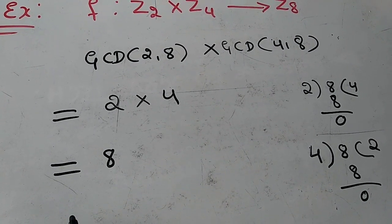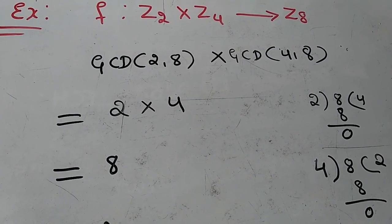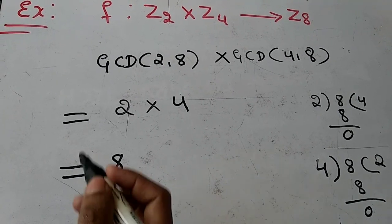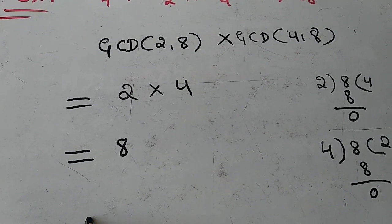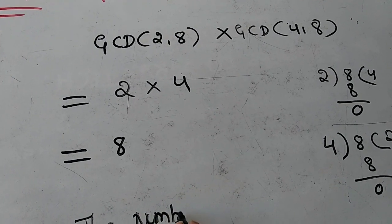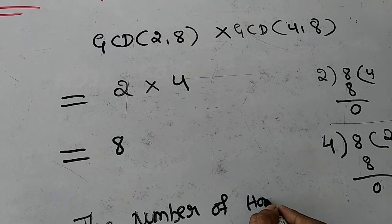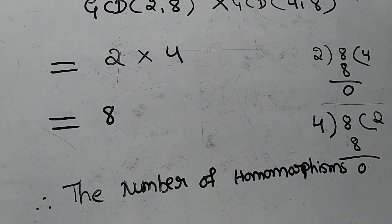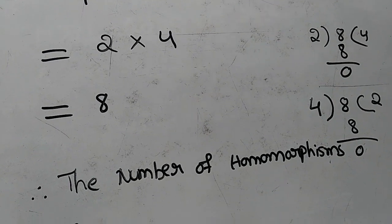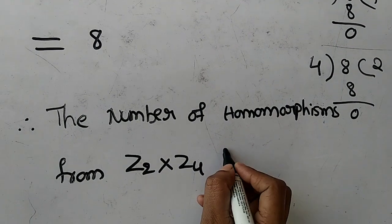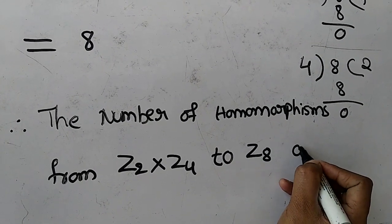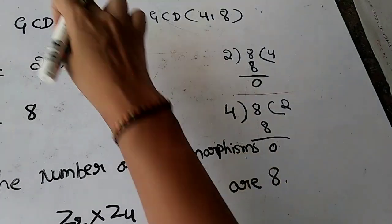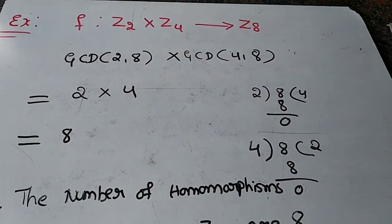Therefore, 2 multiplied by 4 gives 8. The number of homomorphisms from Z2 cross Z4 to Z8 is 8. If you remember the formula and concept, you will definitely score marks.